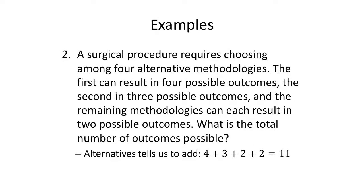Now, this surgical procedure requires choosing among four alternative methodologies. The first can result in four possible outcomes. The second can result in three possible outcomes. And the remaining two methodologies can each result in two possible outcomes. What's the total number of possible outcomes? Well, these are alternatives. We're going to look at different methodologies. So we'll add four plus three to get seven, and two makes nine plus two more to get 11.